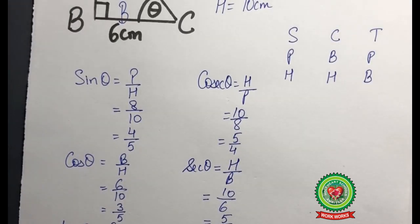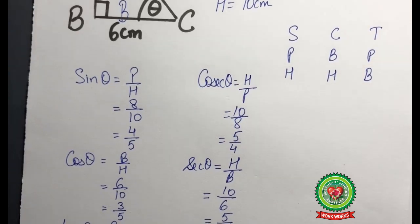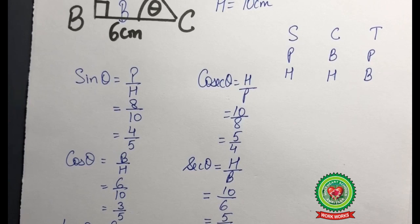So students, now you should be clear on how to solve a sum based on finding the six trigonometrical ratios when all three sides are given. You have a worksheet in your snap homework based on this topic — solve that worksheet. Thank you and have a nice day.